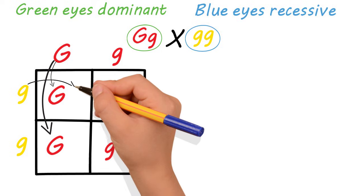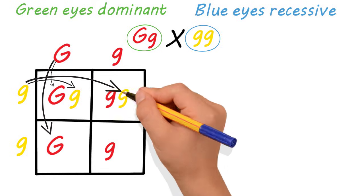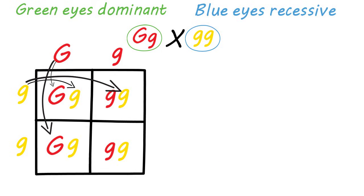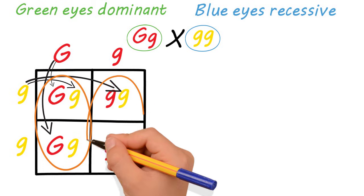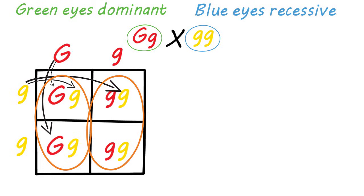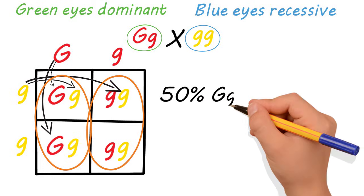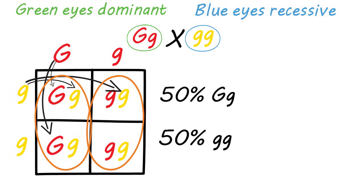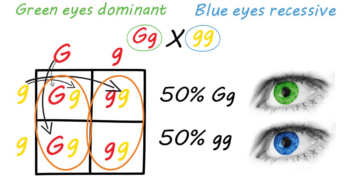Each quadrant represents a 25% chance that that genotype will result in the offspring. In this case, we have only two possible genotypes: big G, little g and little g, little g. Each genotype has a 50% chance of showing up in the offspring. Similarly, you have two possible phenotypes — green eyes and blue eyes — with a 50% chance of each.